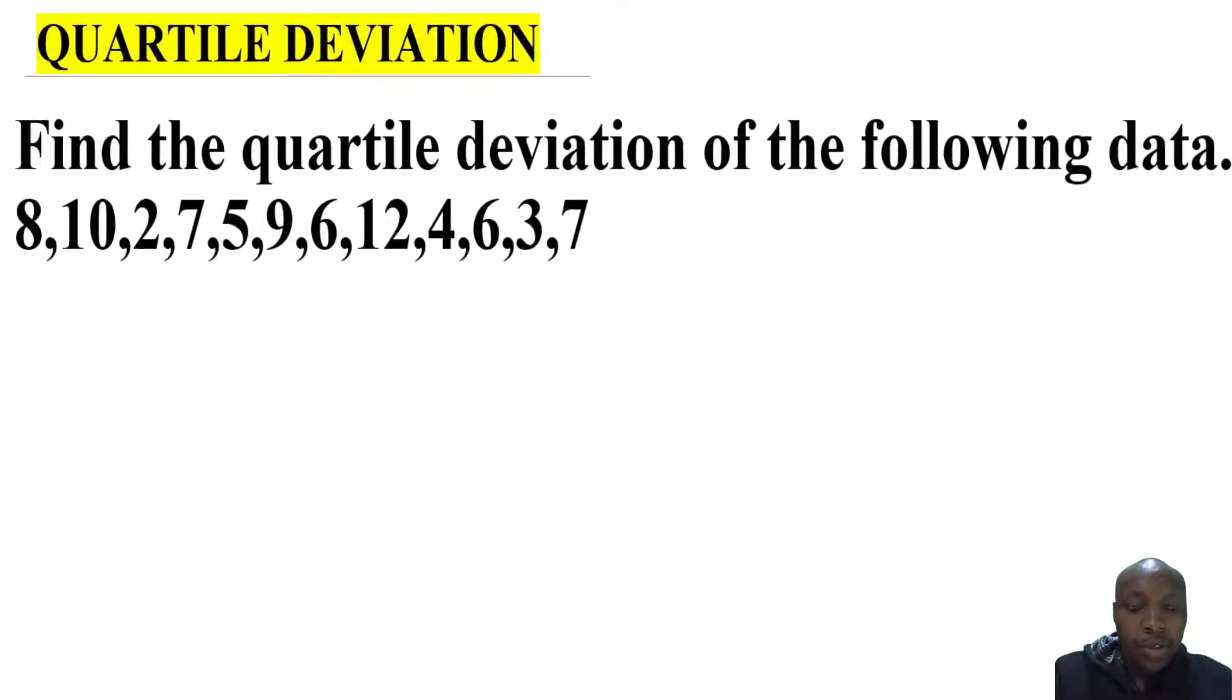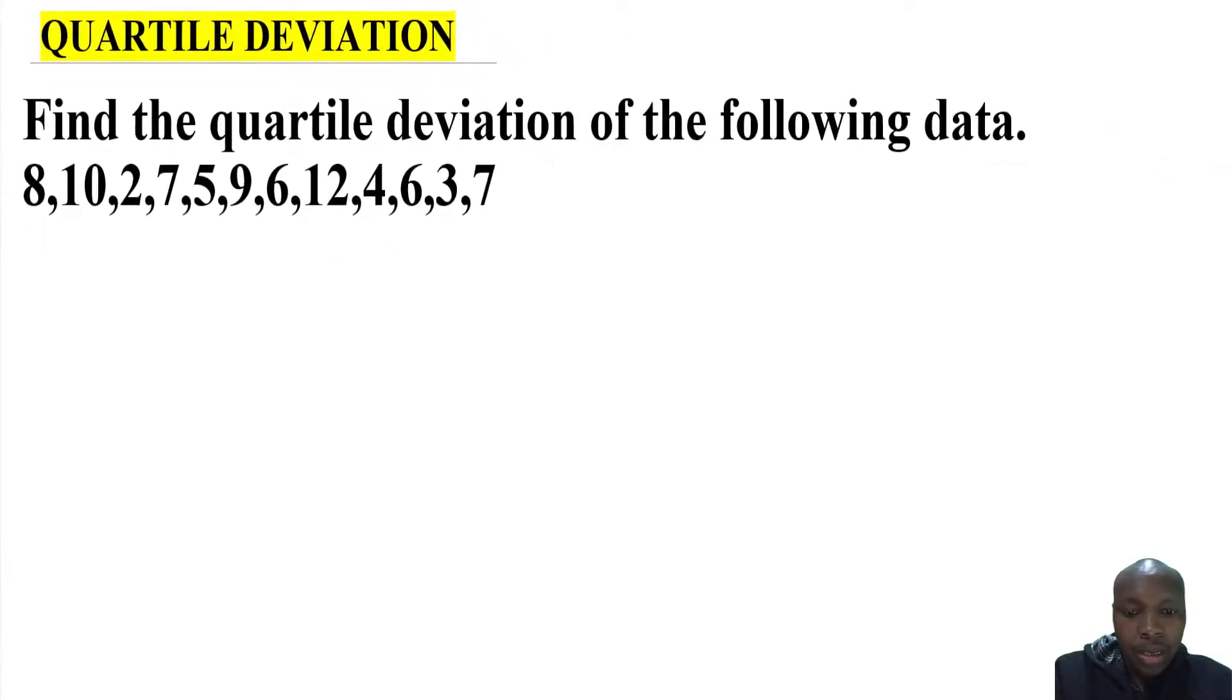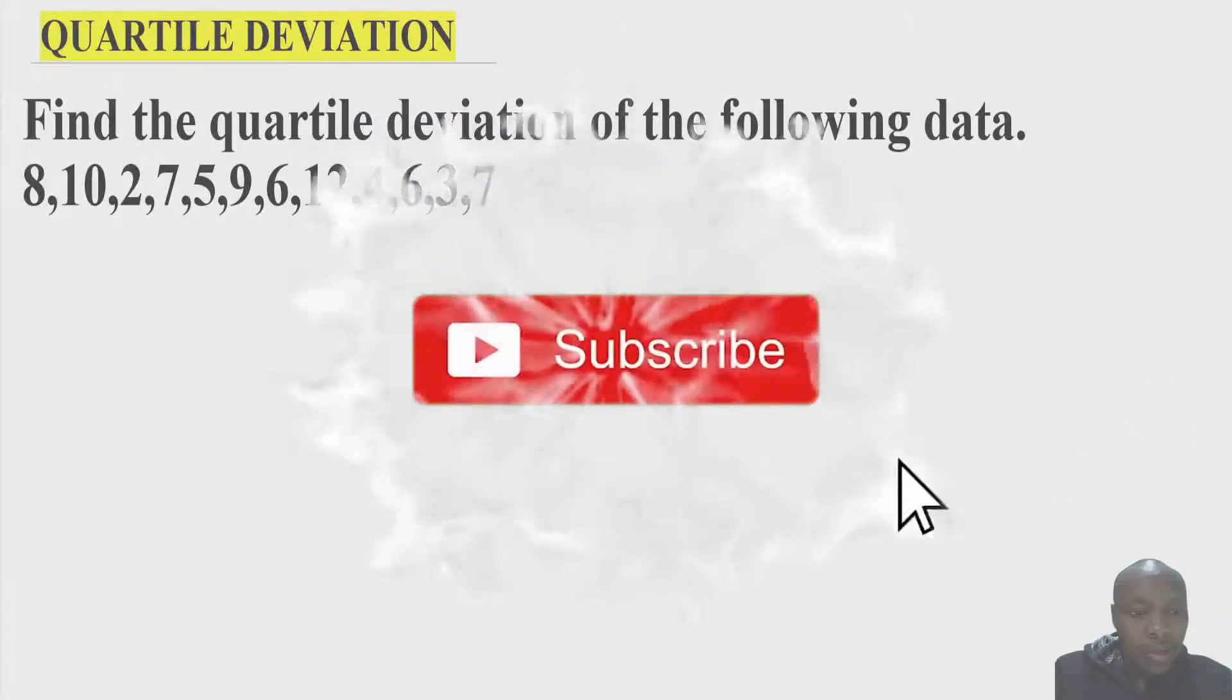Welcome, let us work with this question on quartile deviation. It reads, find the quartile deviation of the following set of data. This one is ungrouped data. So we need to understand how to get the quartile deviation of both the grouped and the ungrouped data. So how do we get the quartile deviation of the ungrouped data?